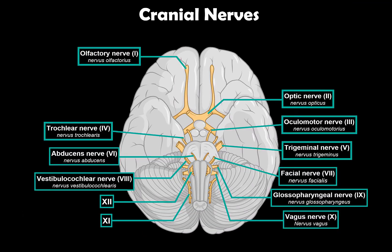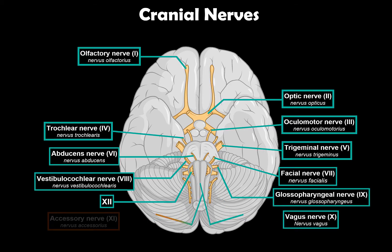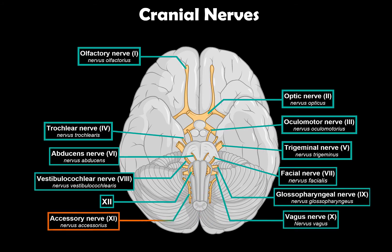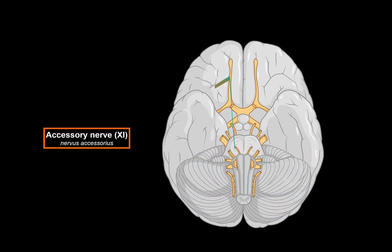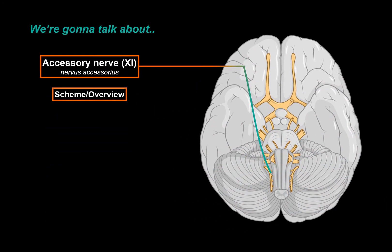What's up? TimeTalksMed here. Let's continue our cranial nerve series. Cranial nerves are 12 pairs of nerves that exit the brain and the brainstem. And in this segment, we will talk in detail about the 11th cranial nerve, the accessory nerve. We will do that by first drawing a quick scheme of the accessory nerve pathway, talk about the distribution of nuclei and the course of this nerve, and then go through the two main branches that this nerve gives off.